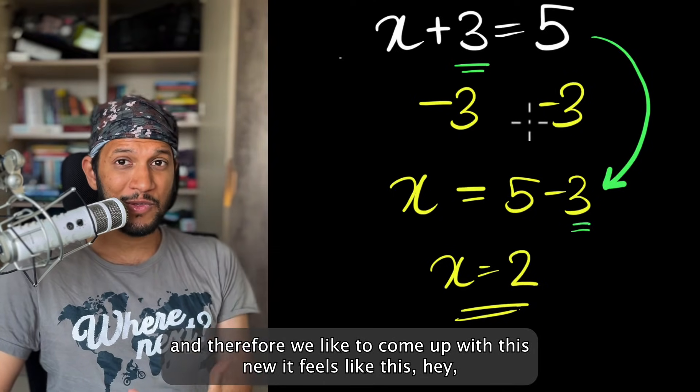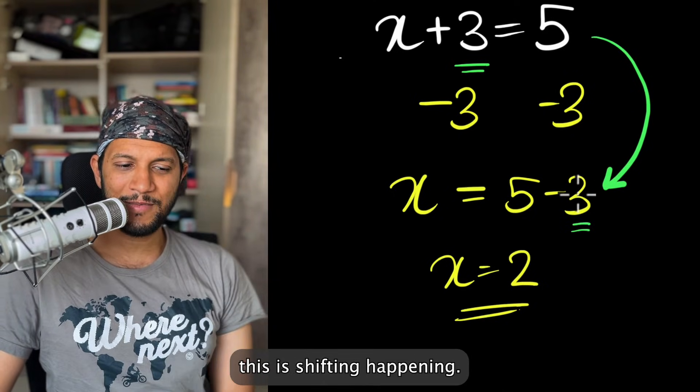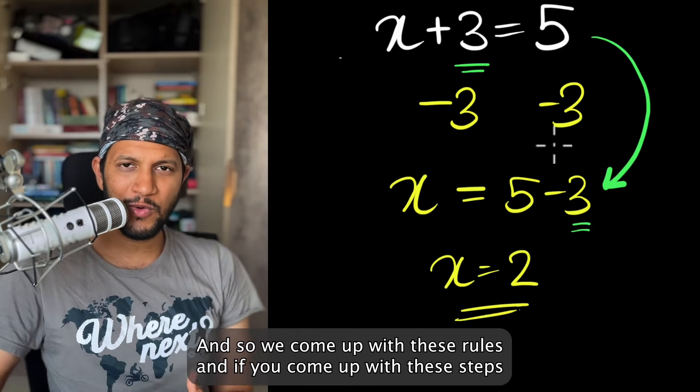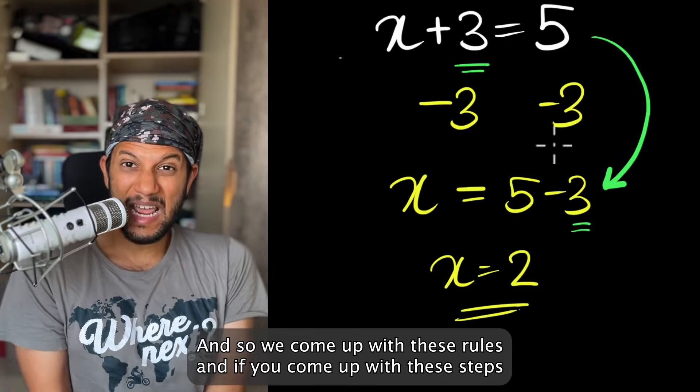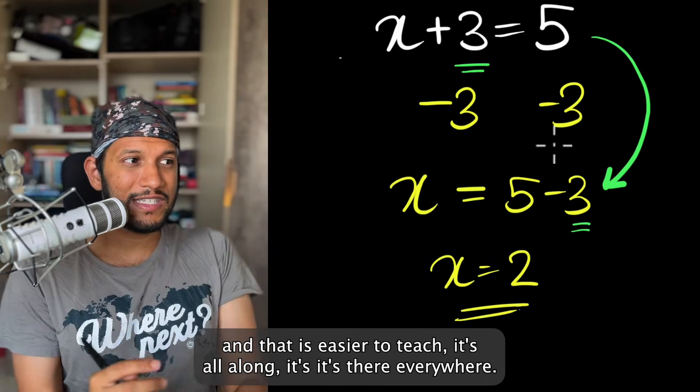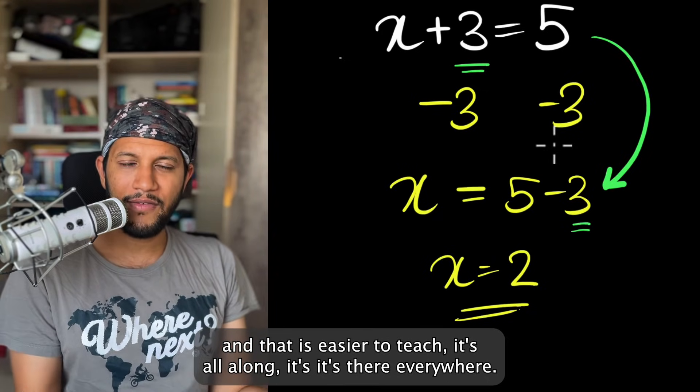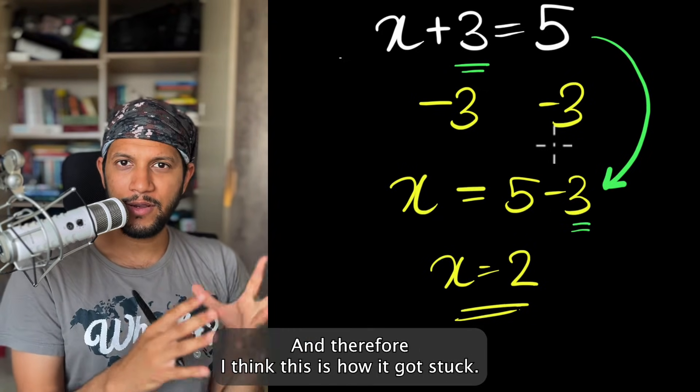And our brains love to skip steps and come up with patterns. And therefore, we like to come up with this new, it feels like this. Hey, this is shifting happening. And so we come up with these rules. And if you come up with these steps and that is easier to teach, it's all along. It's there everywhere. And therefore, I think this is how it got stuck.